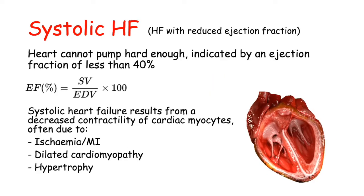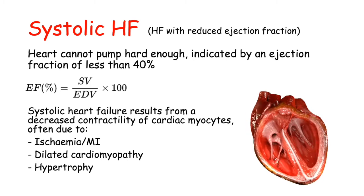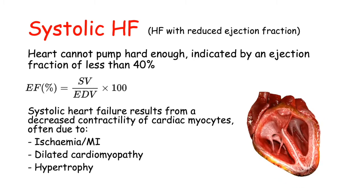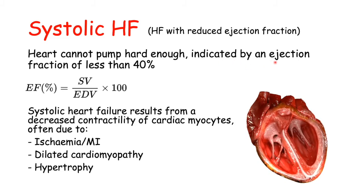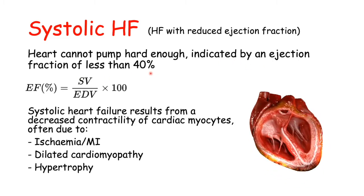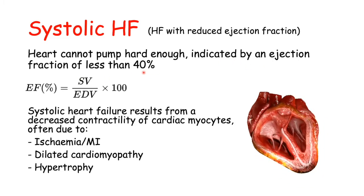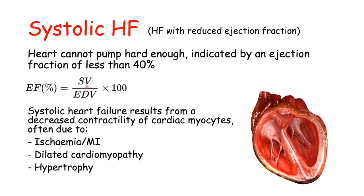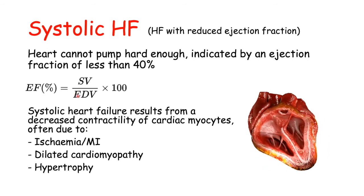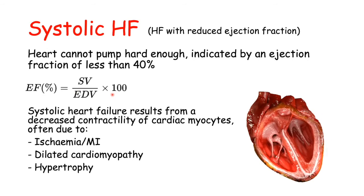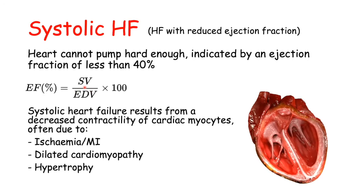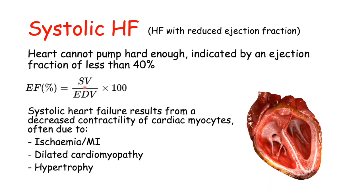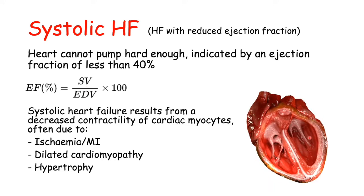In systolic heart failure, the heart cannot pump hard enough, so it's not pumping that much blood out. This is indicated by an ejection fraction of less than 40%. The ejection fraction is calculated by stroke volume divided by end-diastolic volume, times 100. The stroke volume is the volume of blood pumped out of the ventricle with each contraction.